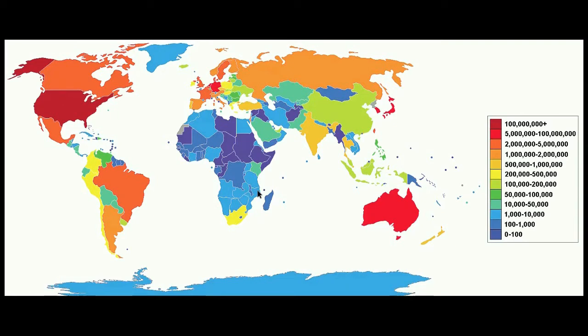If every country had the same number of internet hosts, what color would you use? Additive color suggests that when all colors are combined, you get the color white. Therefore, the answer might be that, according to the map, the most egalitarian locations for internet access are in the Earth's vast oceans.